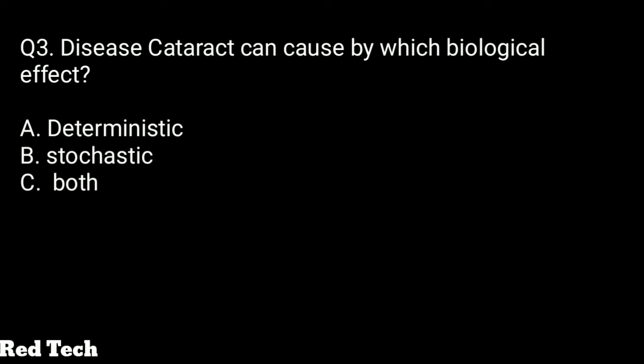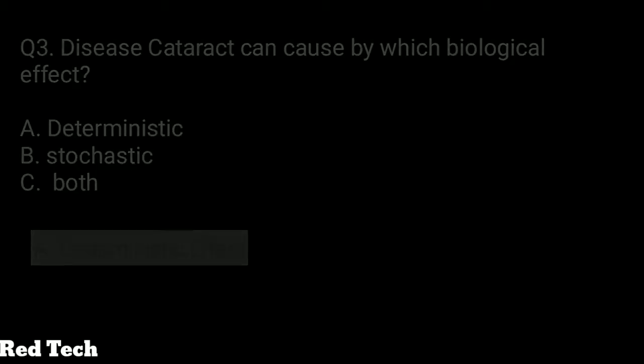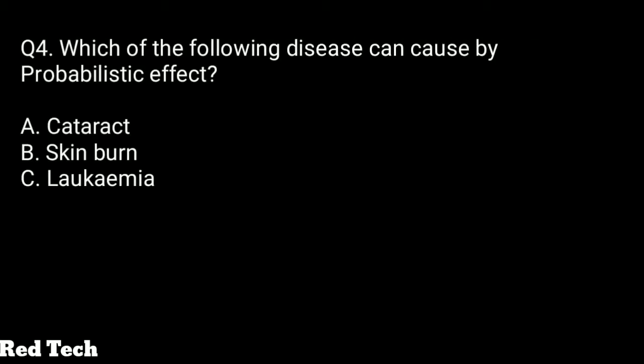Question number three: the disease cataract can be caused by which biological effect? The options are deterministic effect, stochastic effect, or both. The right answer is the deterministic effect — cataract disease can occur in the patient due to the deterministic effect.